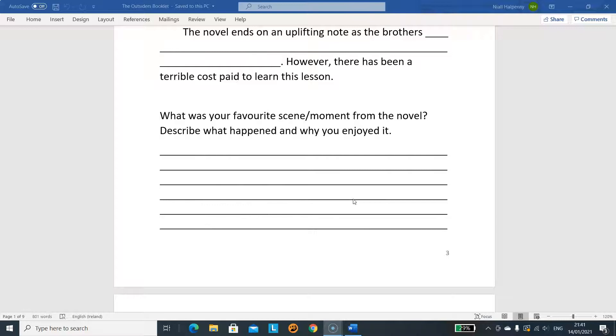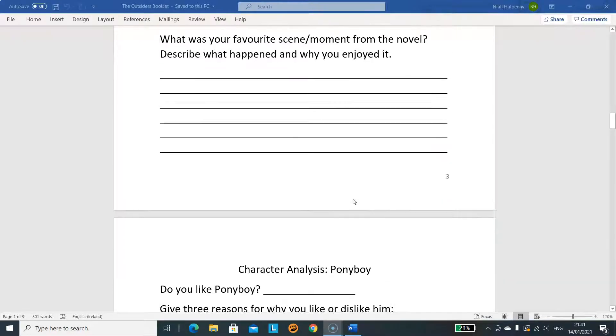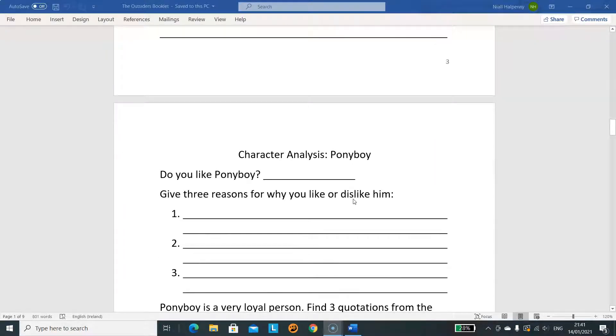When I'm asking you to describe what happened, I'm looking for a few details here. Our first lesson today is just going to be these first few tasks, the first three pages of the booklet. I'm looking for you to give me details here. As you see, there's about six or seven lines there. I want all them filled. My favorite moment is, say, the moment with the rumble. I enjoyed this moment because of this reason, this reason, this reason. You're giving me detail. You're not just saying my favorite moment is when Johnny and Pony run away. One sentence is not enough. I'm giving you six, seven lines. I want them filled up with a bit of detail please.